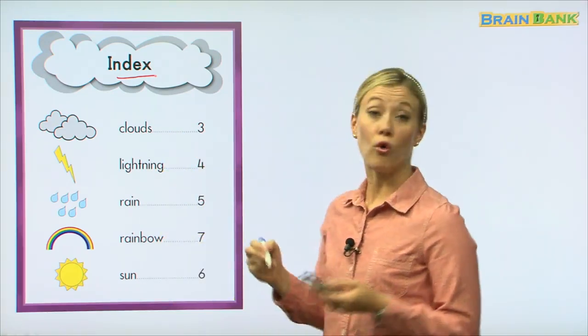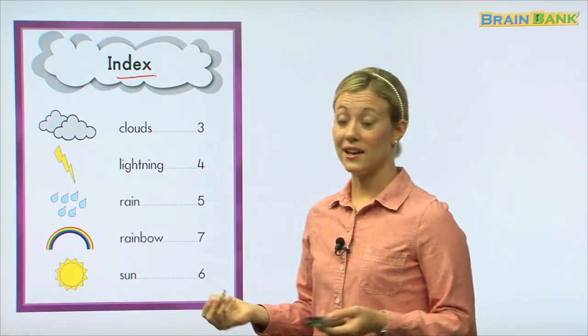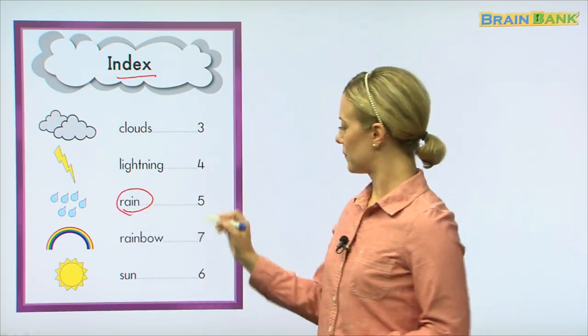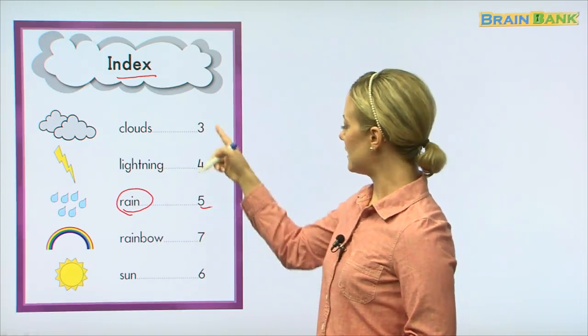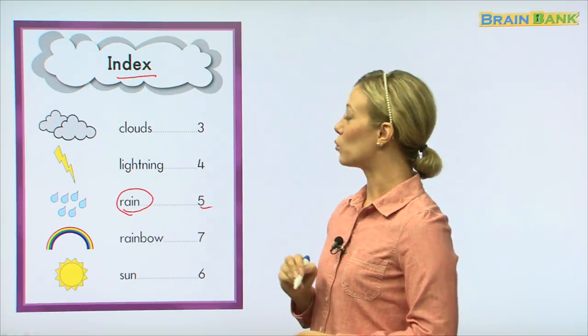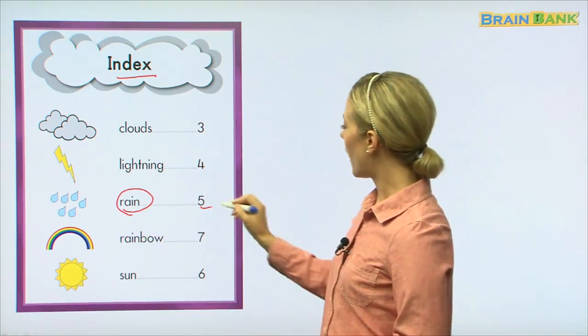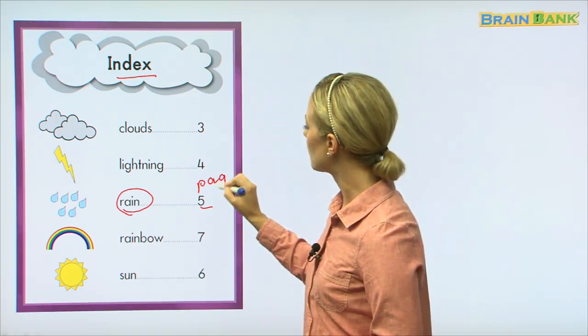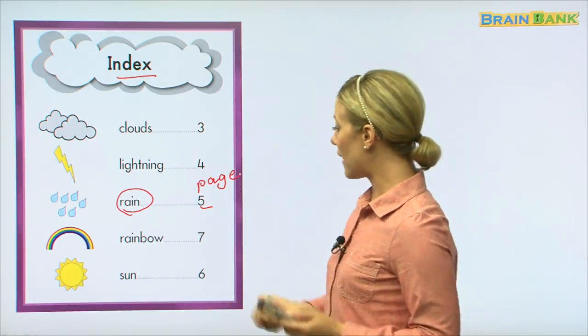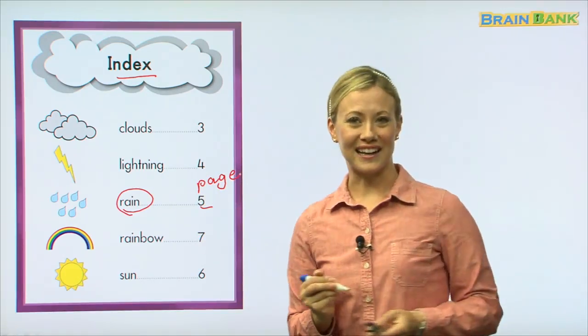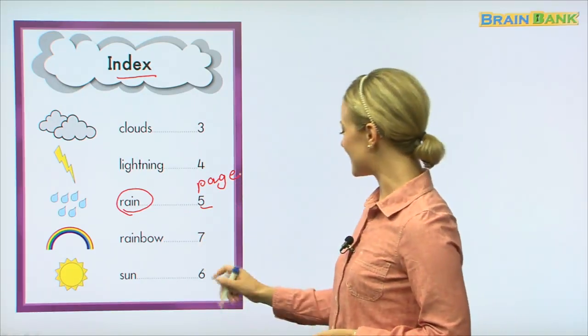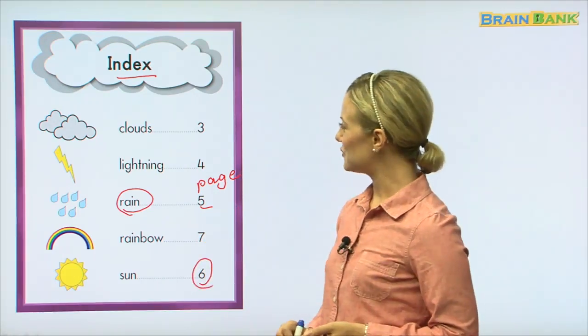So, for example, if I want to read and see pictures of rain, where should I go? Ah. These are page numbers. So, if I want to see rain and read about rain in this book, I should go to page five. Page five. Now, what if I want to see a beautiful sunshine and read about the sun? What page should I go to? Yes. Page six. Good job.